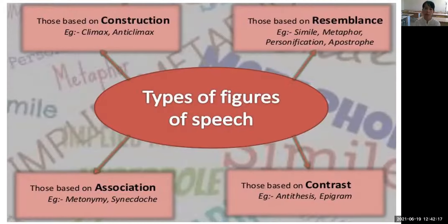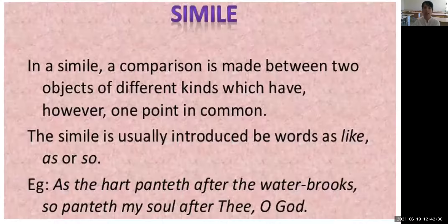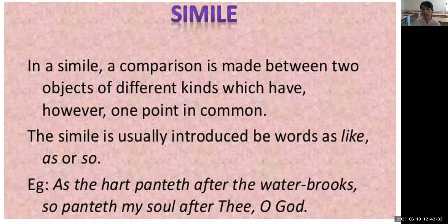From this slide, we can see that different figures of speech are based on different things: construction, resemblance, association, and contrast. The first one is simile. As you can see, simile is based on resemblance — that is, similarity.